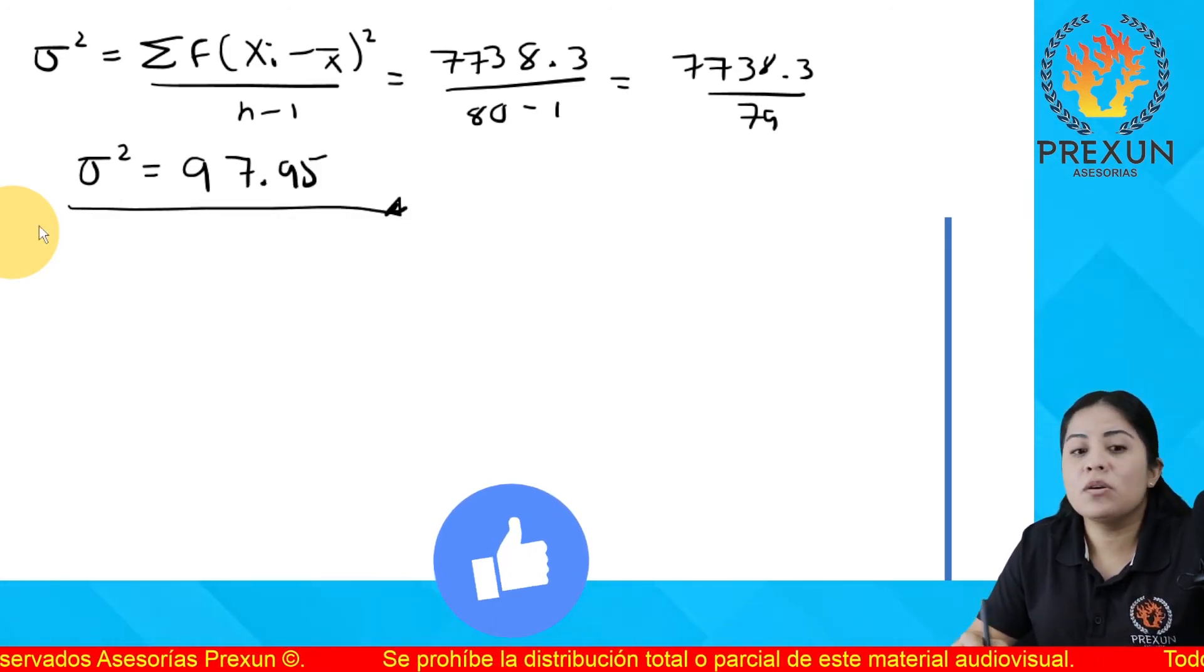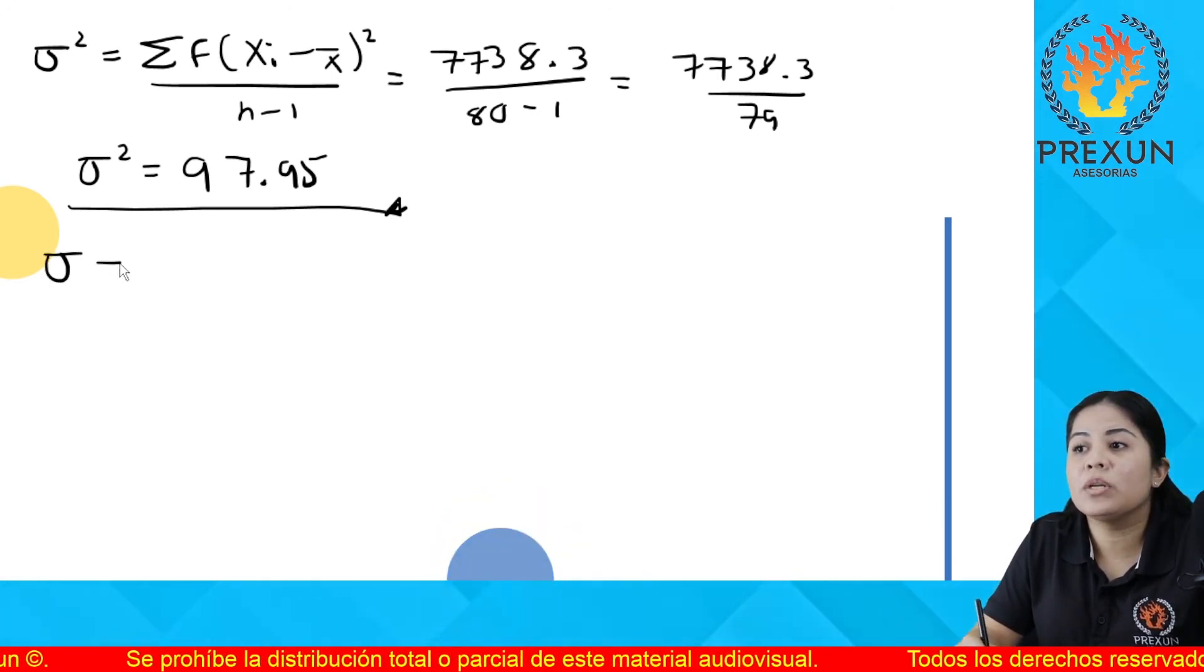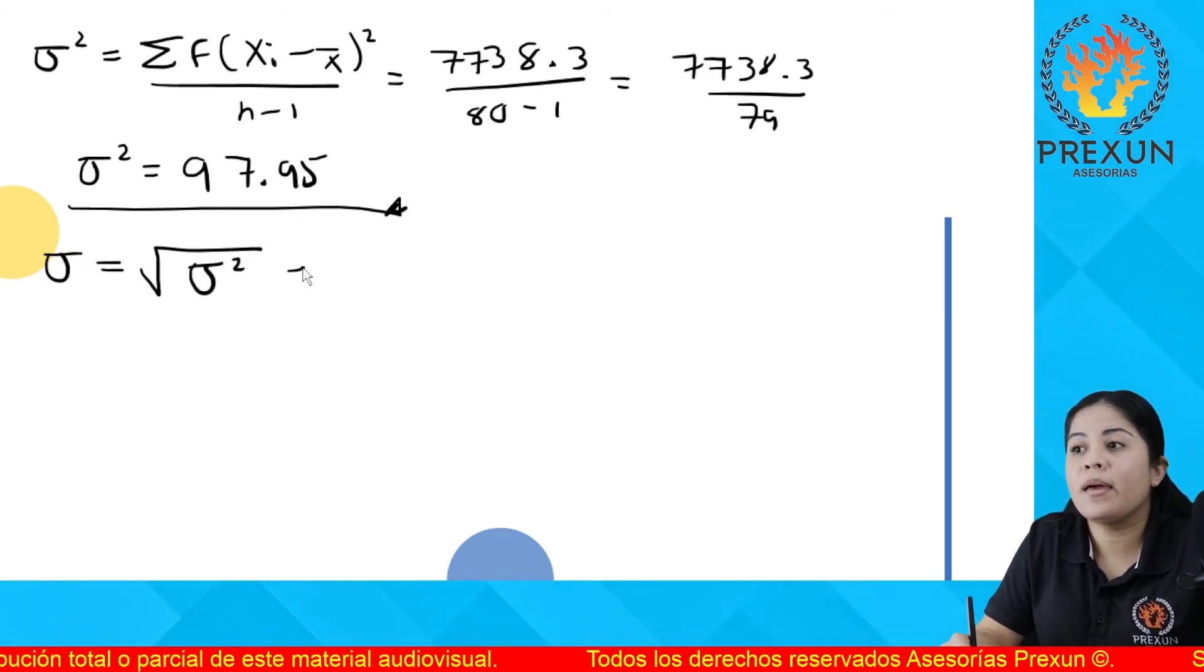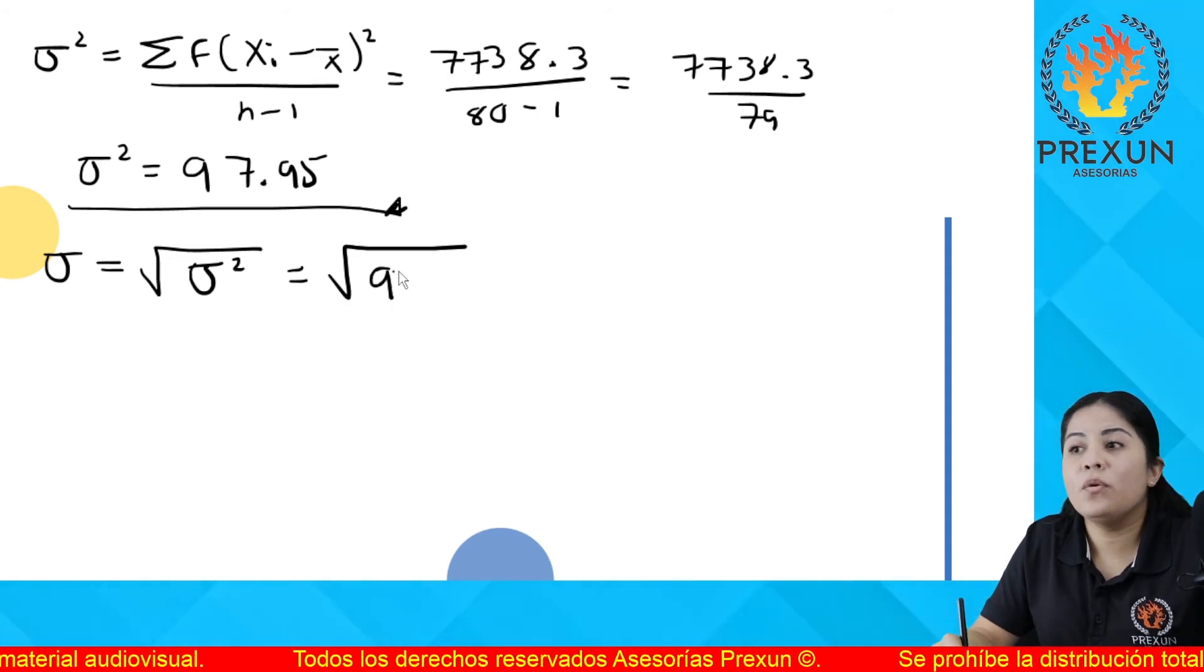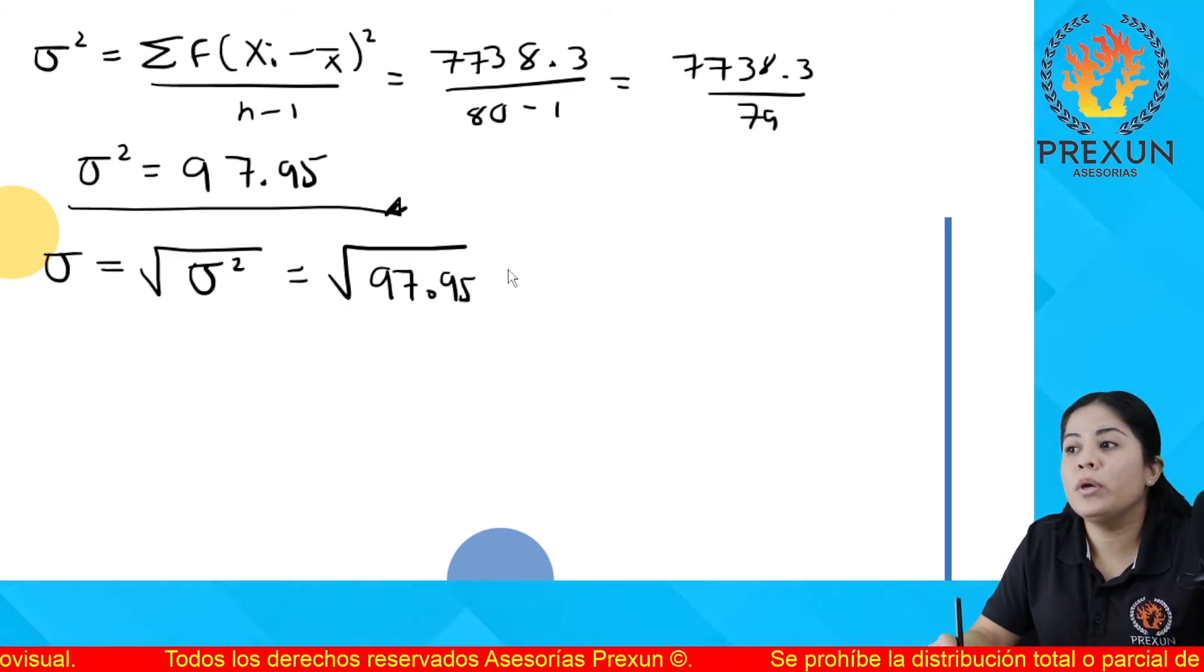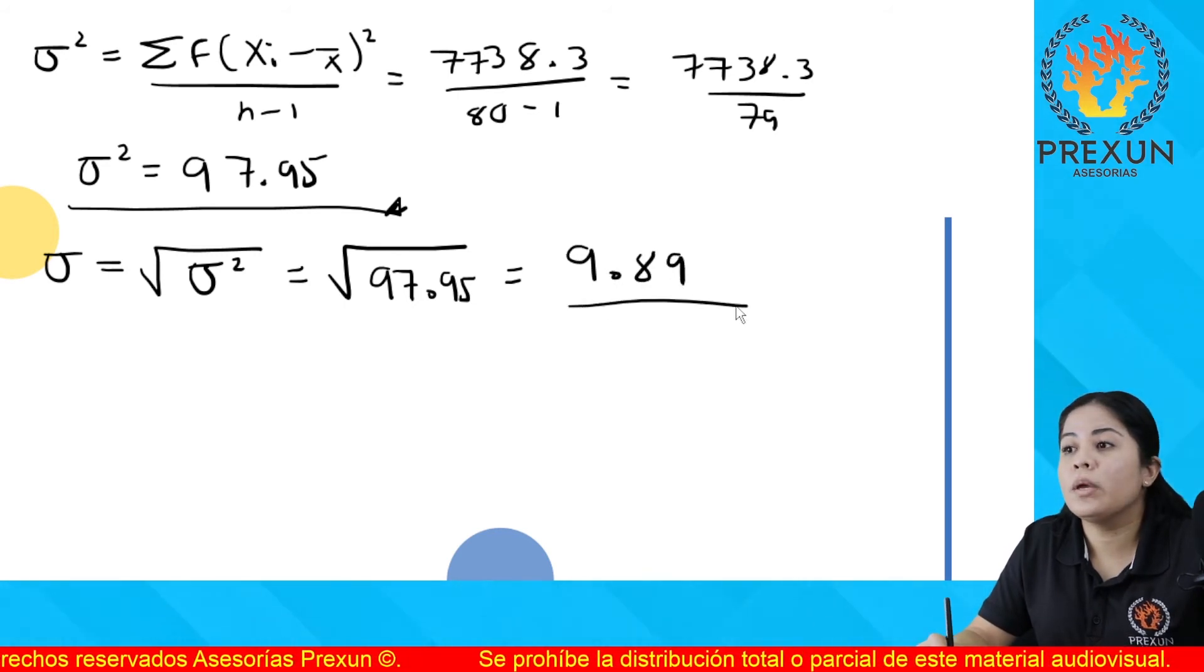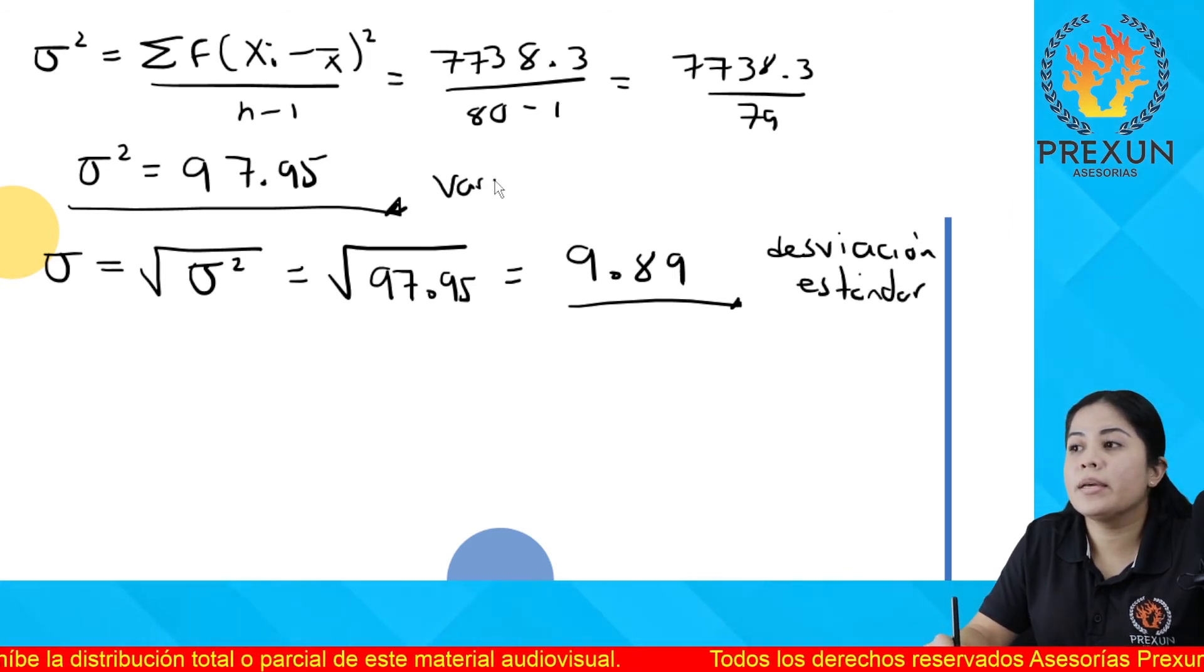Ya tengo la media, ya tengo la varianza. Ahora vamos a obtener la desviación estándar. ¿Cómo se obtiene? Al obtener la raíz cuadrada de la varianza. Esto es la raíz cuadrada de 97.95. Su raíz cuadrada es de 9.89. Ya tengo aquí la desviación estándar y la varianza.